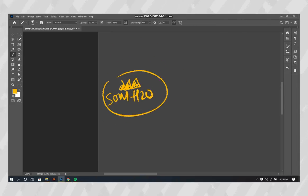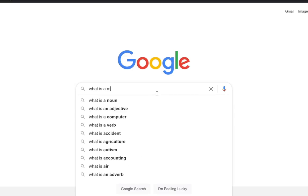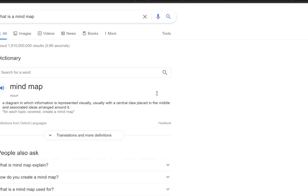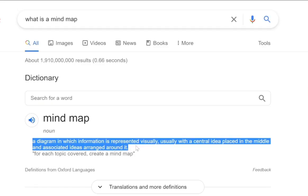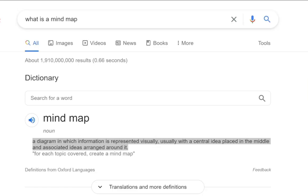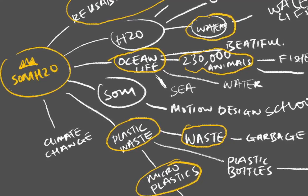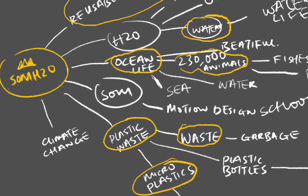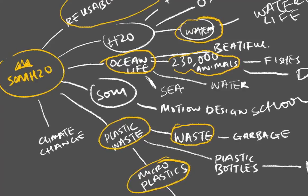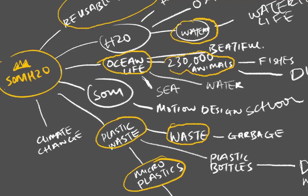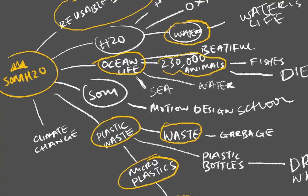After clarifying the brief, I went on to do a mind map. The goal was to help me understand the brief and the client even more and maybe spark a few ideas along the way. A mind map is a diagram where information is represented visually using a central idea placed in the middle and associated ideas around it. With the central subject being SOMH2O, I broke it down into things like H2O which is water — essential to life — and how SOMH2O is finding a solution to cut plastic waste on the ocean, including the problem of microplastics.